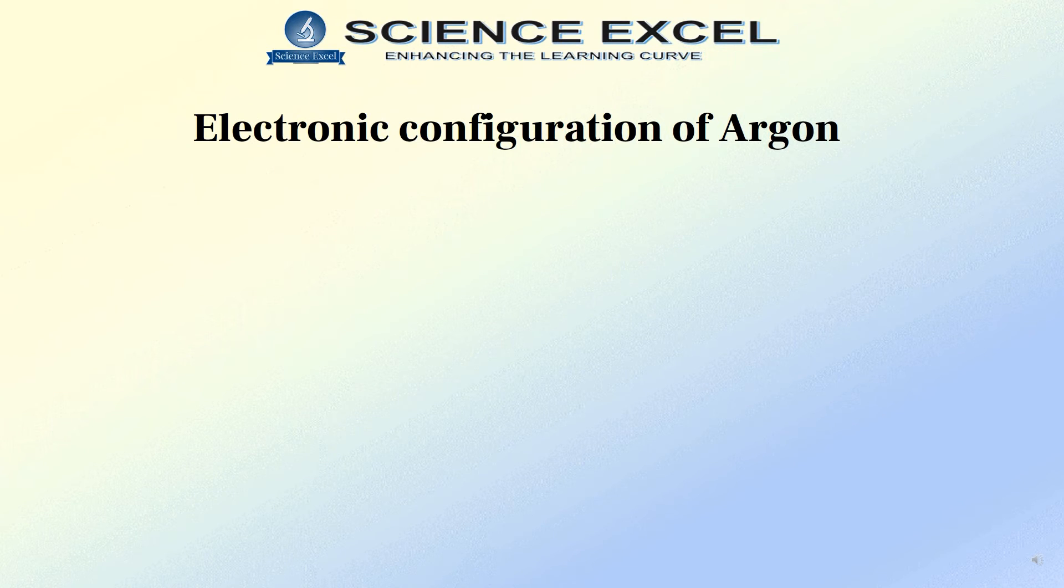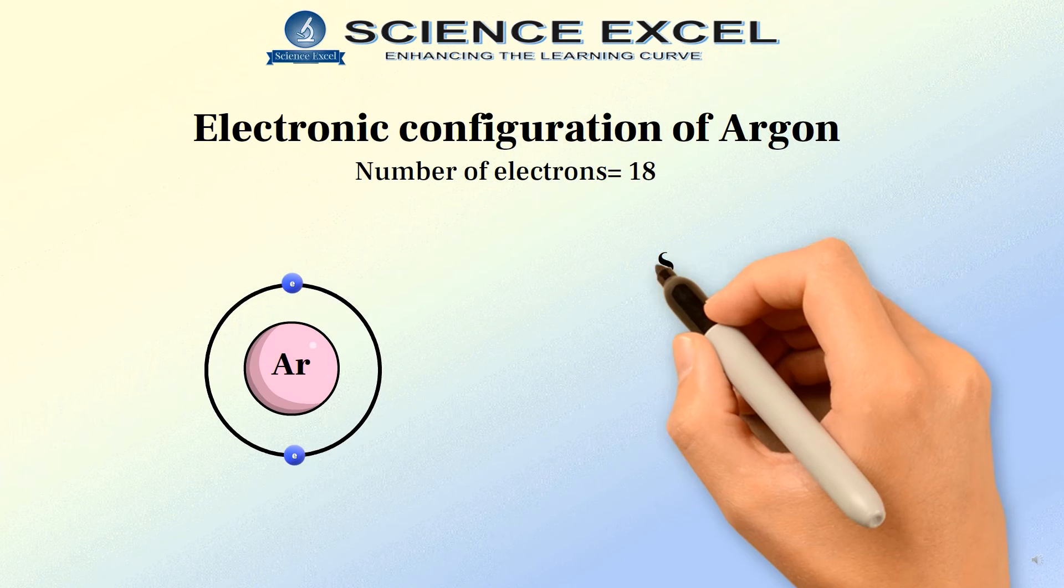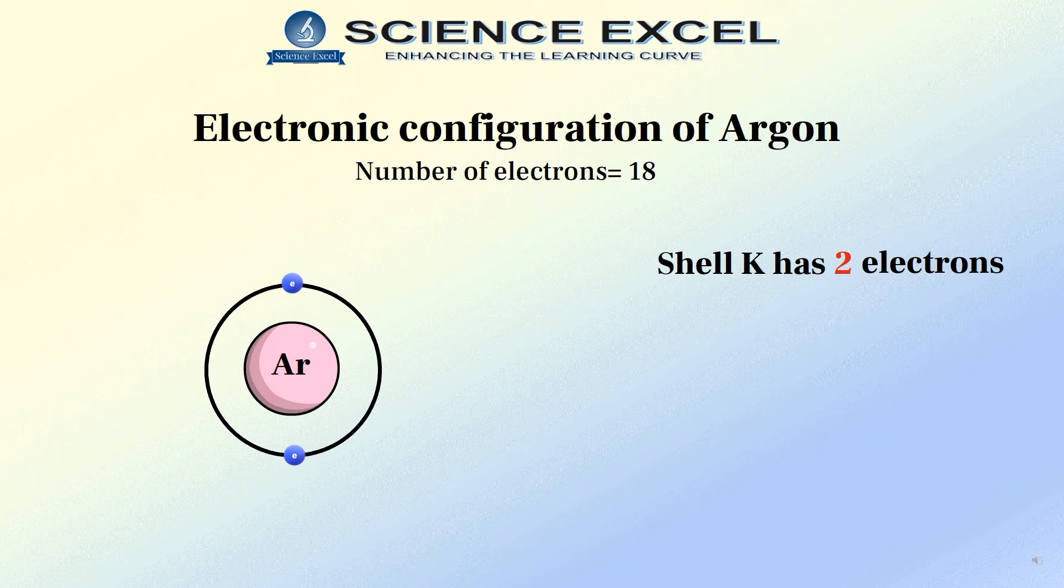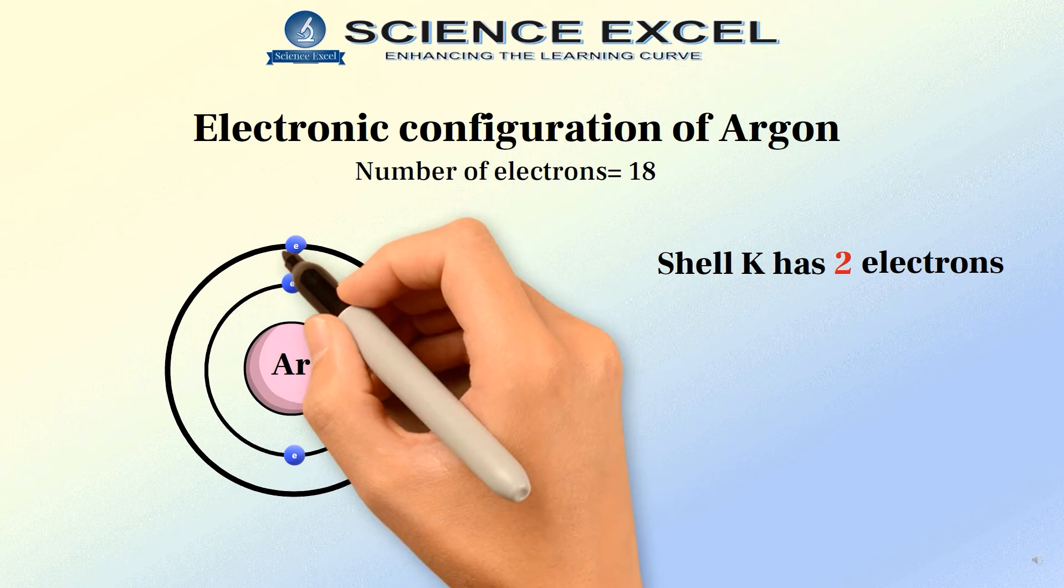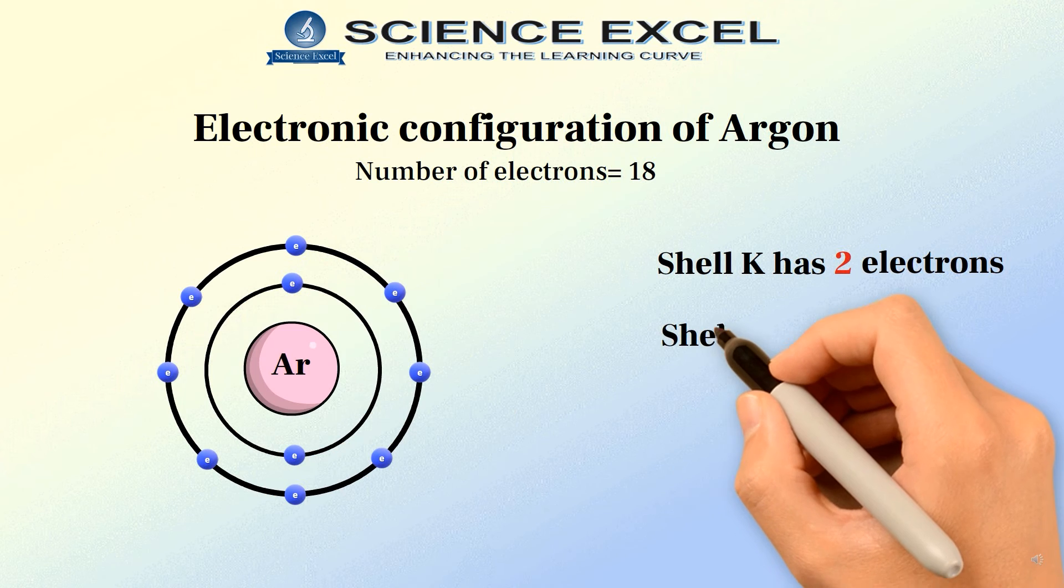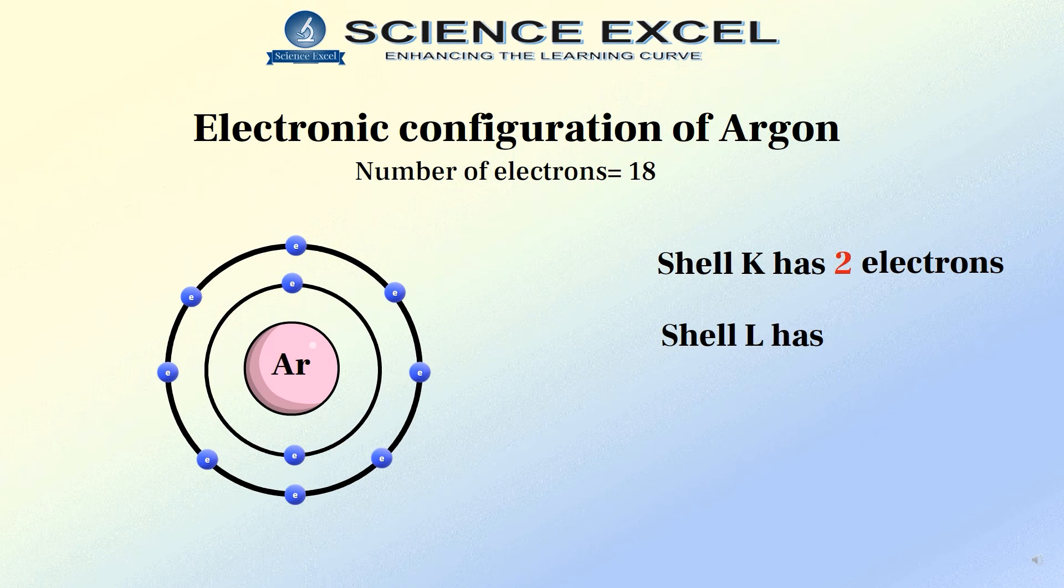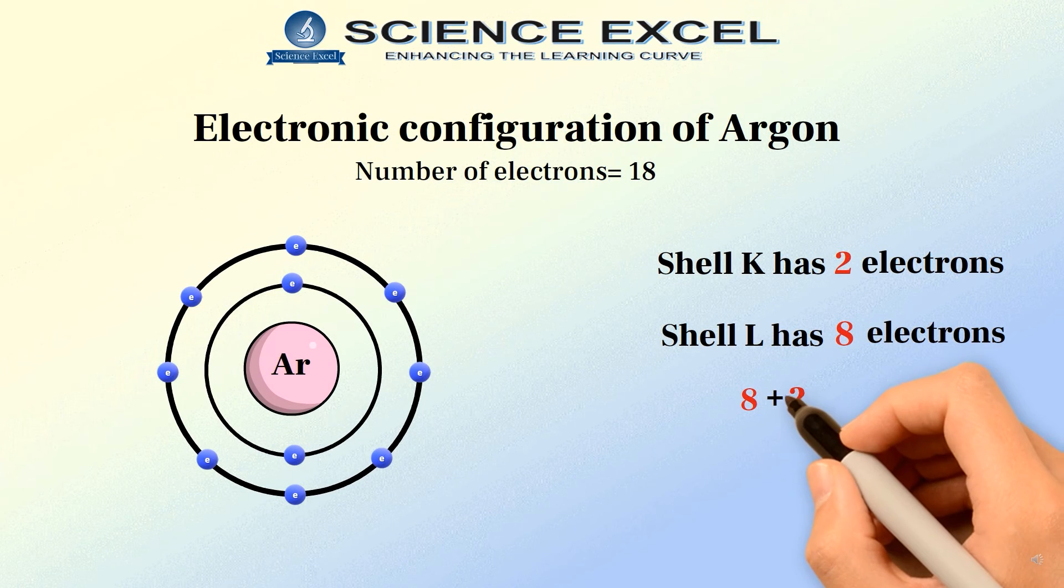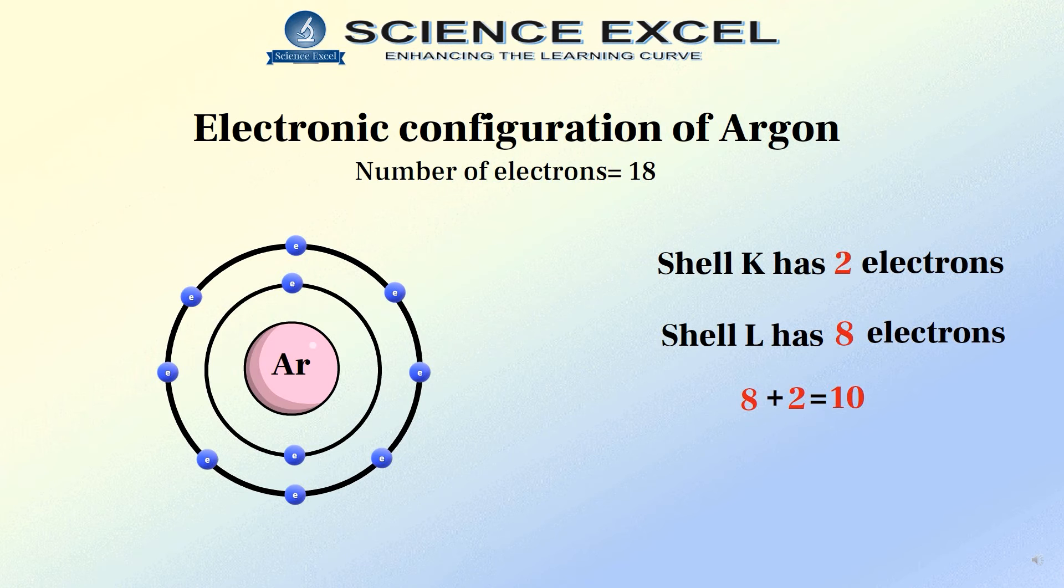Let's take argon atom as an example. Its atomic number is 18. 2 electrons can go to shell K which is the maximum it can hold. Next is the shell L which can accommodate a maximum of 8 electrons. So in total 10 electrons are present in these 2 shells and we are left with 18 - 10 which is equal to 8 electrons.